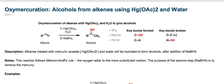Let's talk about the oxymercuration of alkenes using mercuric acetate and water. If you take an alkene and add mercuric acetate with water followed by sodium borohydride, the product is an alcohol. Looking at the key bonds formed and broken: we're forming a carbon-oxygen bond and a carbon-hydrogen bond, while breaking a carbon-carbon pi bond and a hydrogen-oxygen bond.